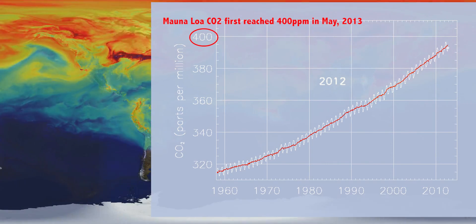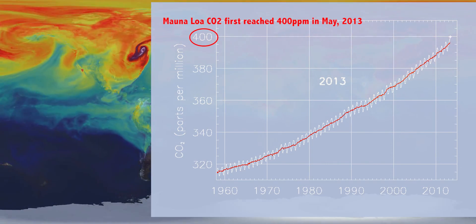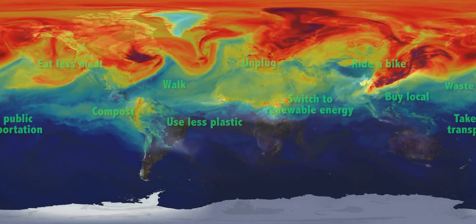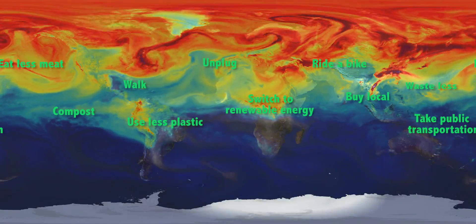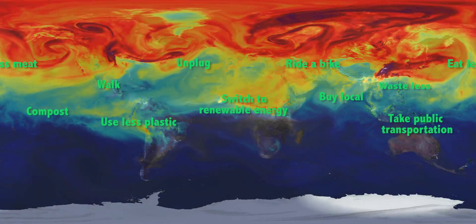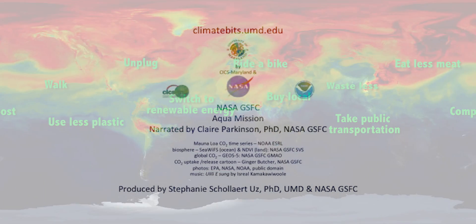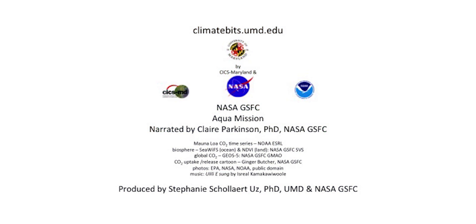Each of us has a carbon footprint. It's the amount of carbon we put into the air through the choices we make about energy consumption, food, and transportation. Each of us could make choices that would help to reduce our individual carbon footprints. For more information, visit climatebits.umd.edu.